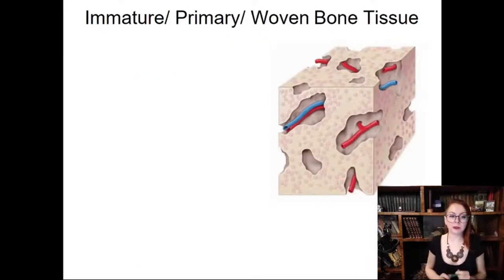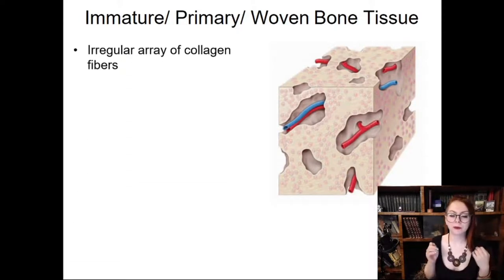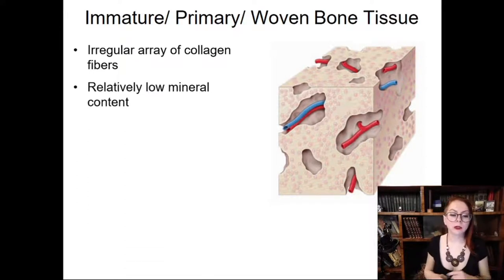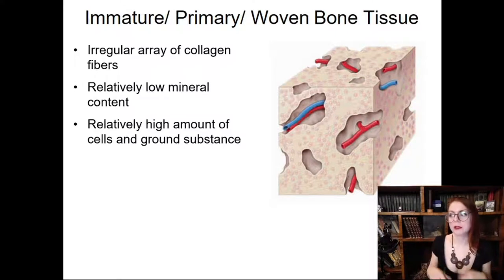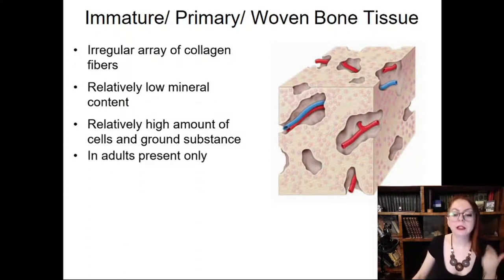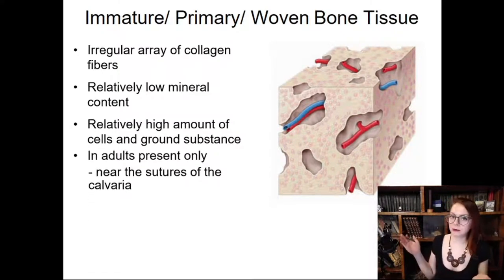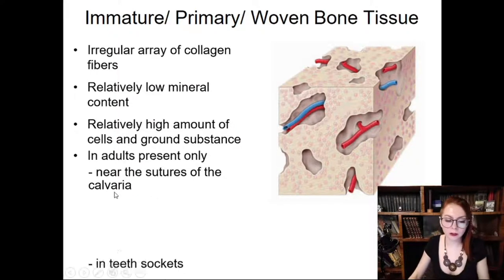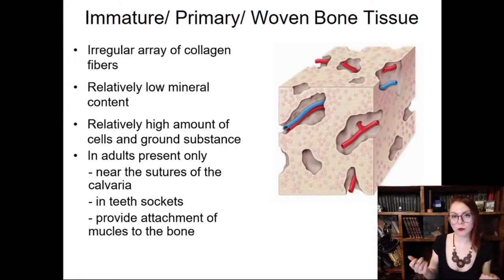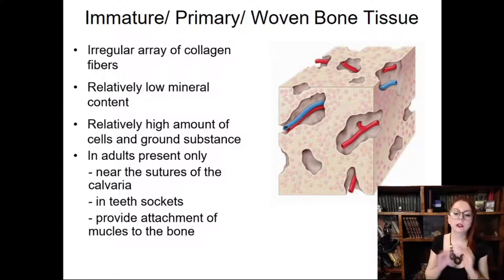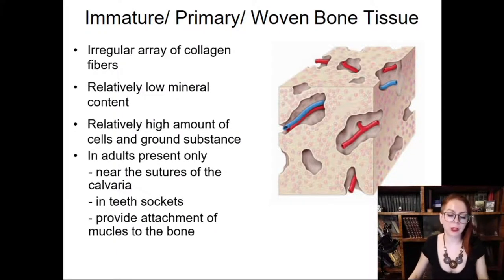Immature bone has an irregular arrangement of collagen fibers — chaotically organized in three-dimensional space — and relatively low mineral content with relatively high cell number, making it less stiff than secondary bone. In adults, primary bone tissue is present only in a few regions: the skull, tooth sockets, and a few other places. After a bone fracture, primary woven bone is formed first, then replaced by lamellar bone.